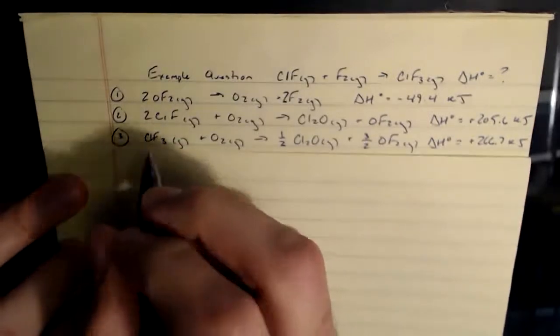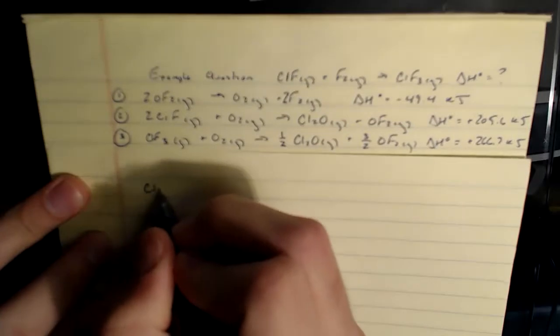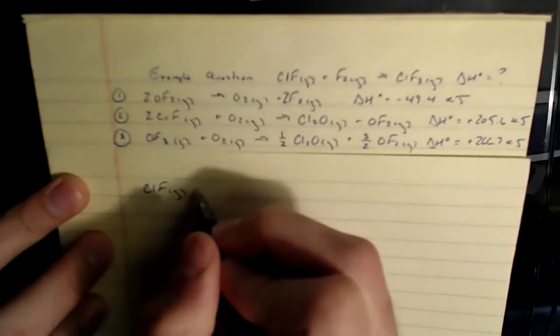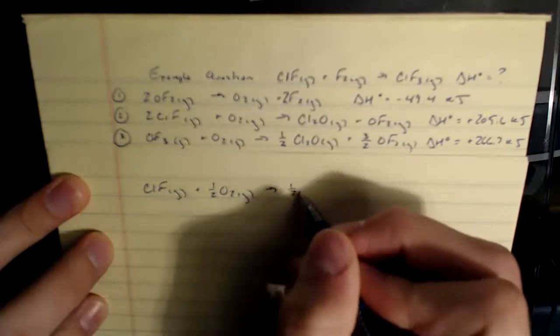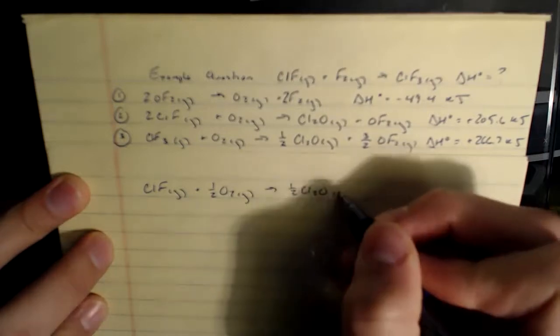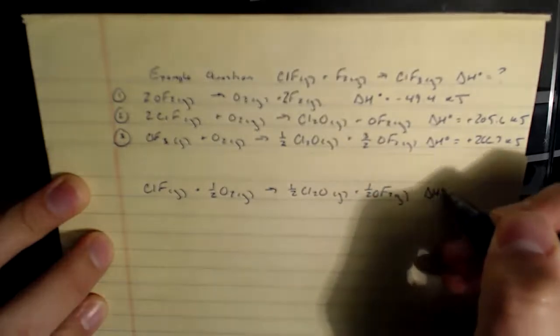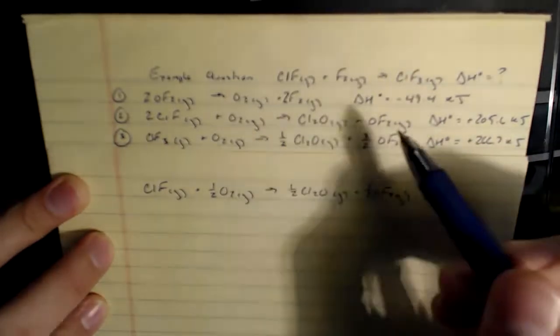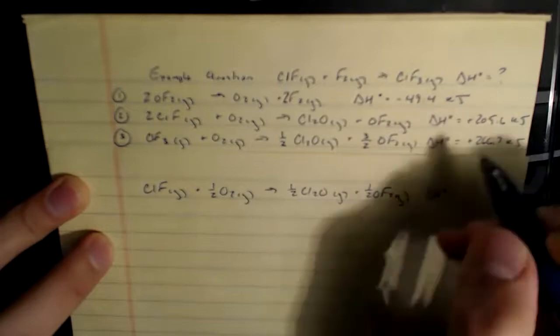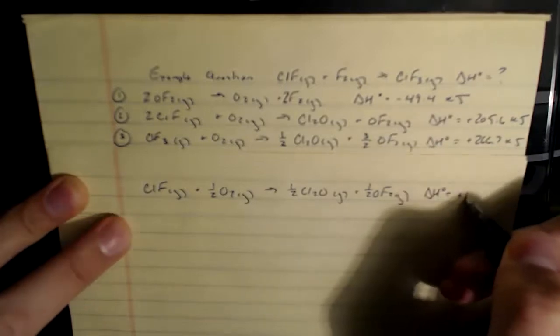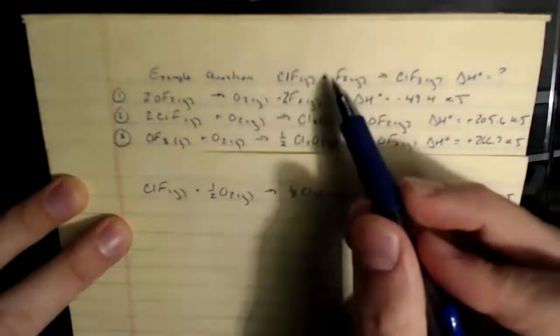So I'm going to rewrite equation 2, but I'm going to half everything. So that's 2 down to 1 ClF gas, now half an O2 gas, making half a Cl2O gas, and half an OF2 gas. And anything that I do to the equation, I also have to do to the enthalpy value. So this was 205.6 before, but I half that as well, and make that a positive 102.8 joules. That gives me my ClF that I'm looking for.